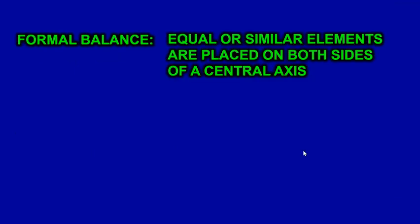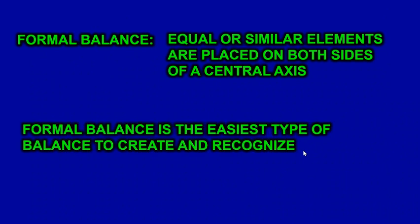Formal balance is when equal or similar elements are placed on both sides of a central axis, and it's the easiest type of balance to create and recognize. With formal balance, we have the concept of symmetry — when a work of art looks like a mirror image on both sides of a central axis. Symmetry expresses dignity, endurance, and stability.